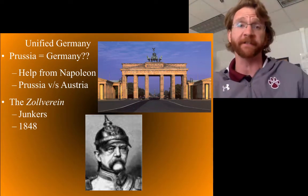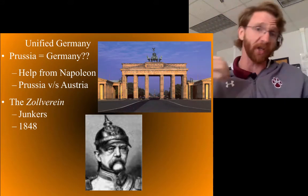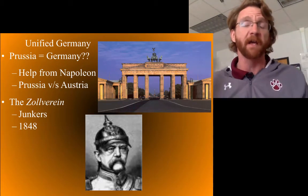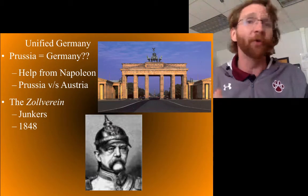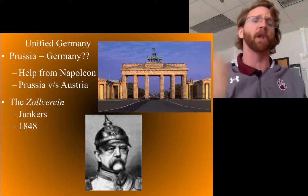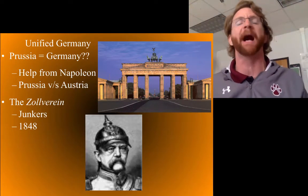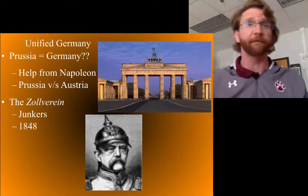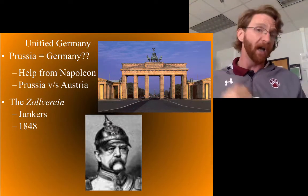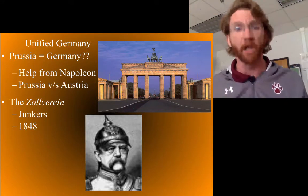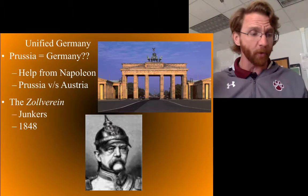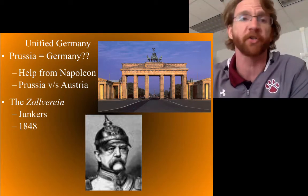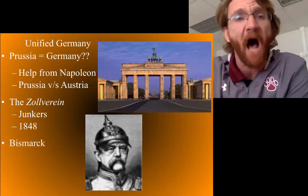1848 was the first attempt at German unification, and it completely and totally failed. They agreed on paper to unite, but had nothing to actually bind them together other than those agreements. In 1860, Frederick William, the king of Prussia, died. Ascending to the throne was his son, William — William I of Germany. William I appointed, in his second year on the throne, my favorite person in all of history: Otto von Bismarck.